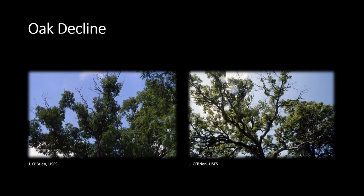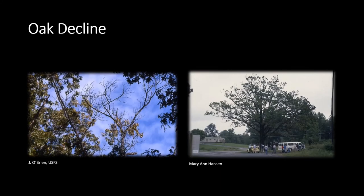Oak decline symptoms are often associated with oak wilt. Symptoms shown here are progressing dieback in the upper crown from the tips of the branches. Oak decline involves the collaboration of predisposing factors such as drought, compaction, urban stressors, and advancing tree age. It is not common for one single cause to be responsible for decline.